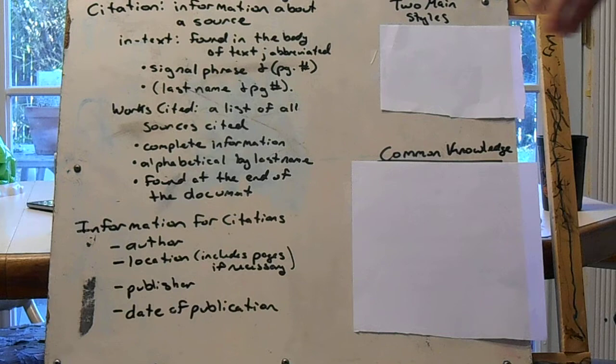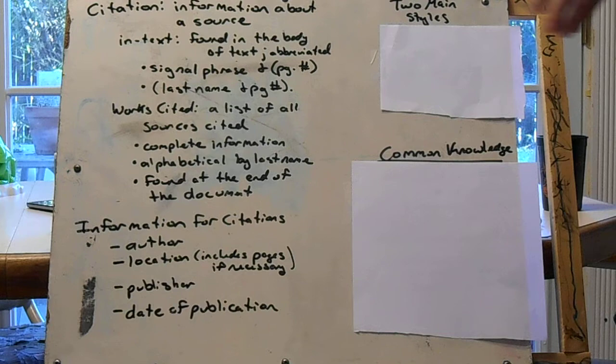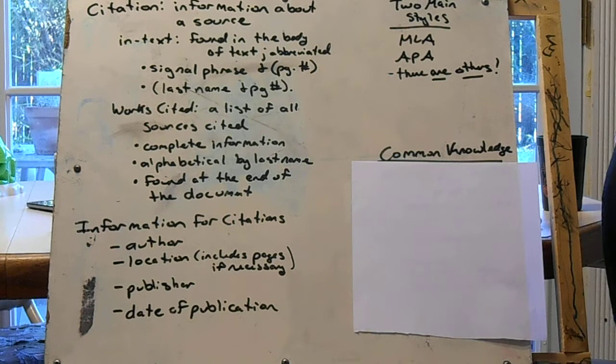So there are two main styles of citations. We have MLA, which is for humanities, such as English courses, and APA, which is primarily for the sciences.